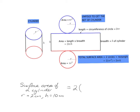It's going to be two of the circles. The area of a circle is always pi r squared, and in this case the radius is two. And then you've got the rectangle — the length of the rectangle is the circumference of the circle, so it's two times pi times the radius, multiplied by the breadth of the rectangle, which is just the height of the cylinder, so in this case it's 10. If I put that in my calculator, I'm going to get 150.796, so that'll be 150.8 centimetres squared, rounded to one decimal place.